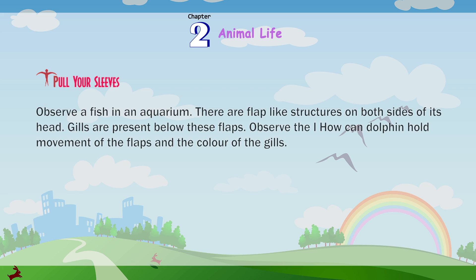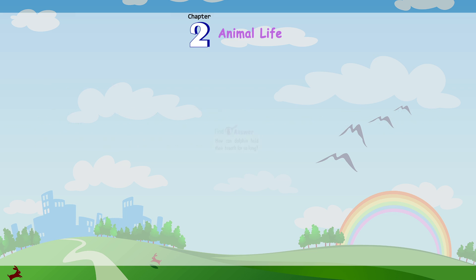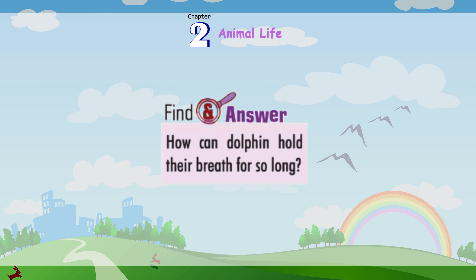Observe a fish in an aquarium. There are flap-like structures on both sides of its head. Gills are present below these flaps. Observe the movement of the flaps and the color of the gills. Find an answer: How can a dolphin hold their breath for so long?